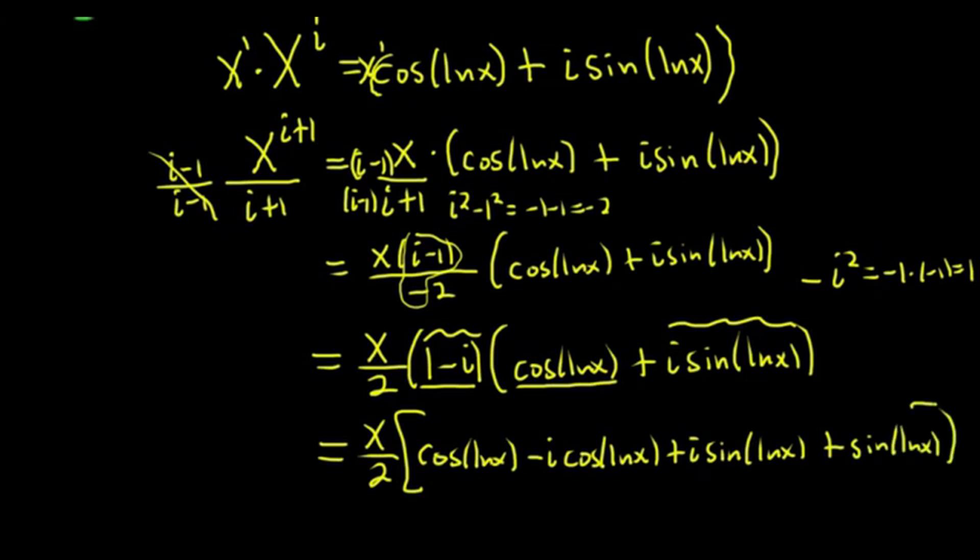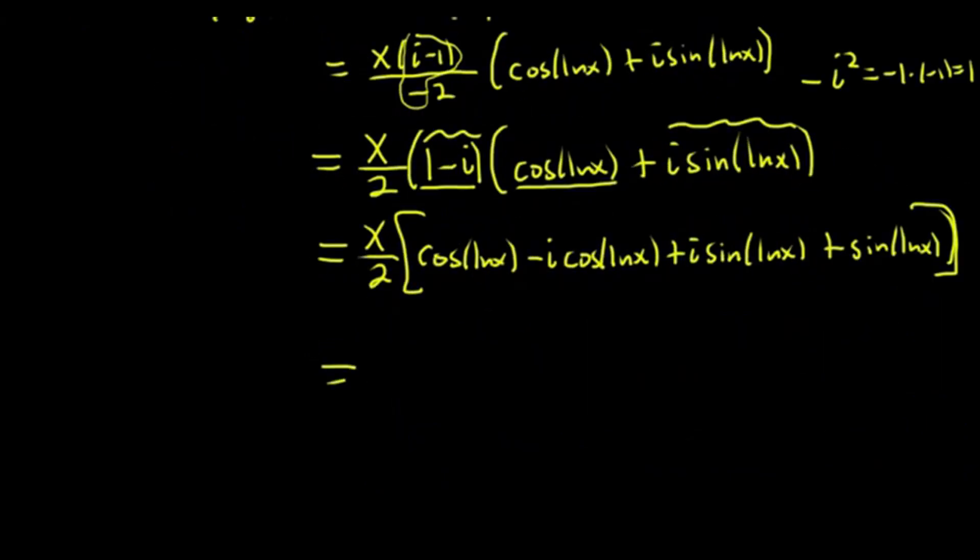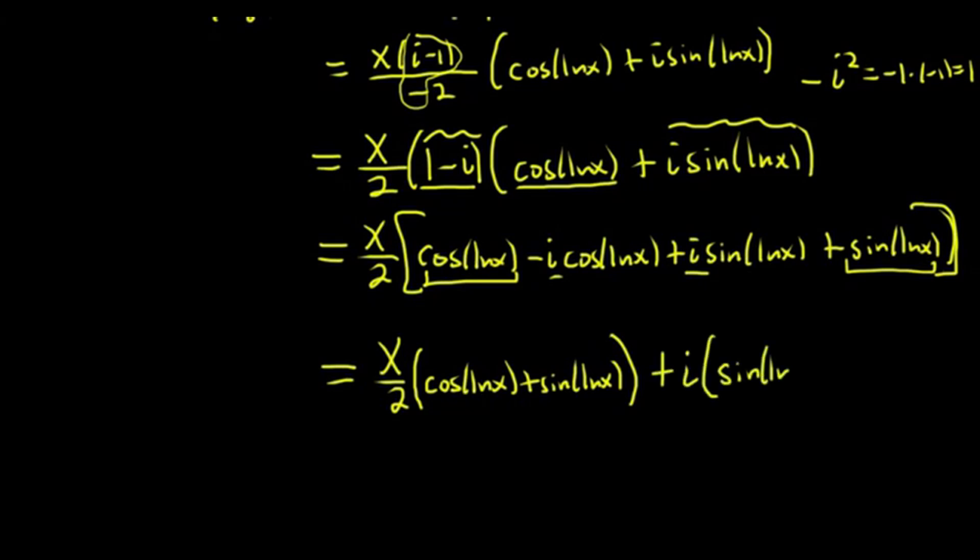I'm going to use a bracket here for clarity. Let's group together what we have. So we have x over 2. And let's look at the real part. That means the stuff that doesn't have i's. Cosine ln x, sine ln x. So it's going to be, I'll put it in parentheses. Cosine ln x plus sine ln x. And then here we have the i stuff. So plus i. This will be sine ln x minus cosine ln x.